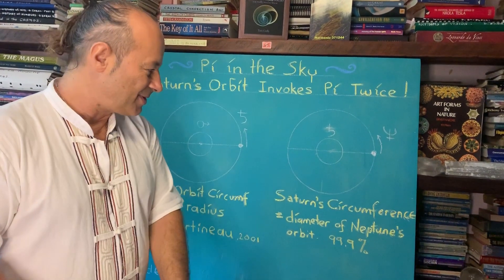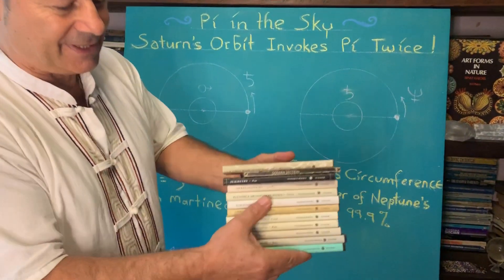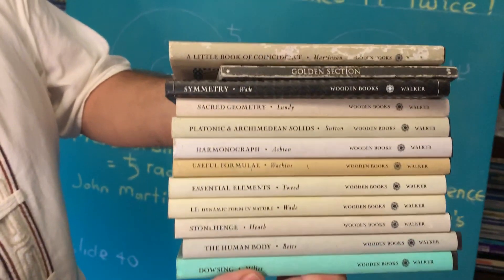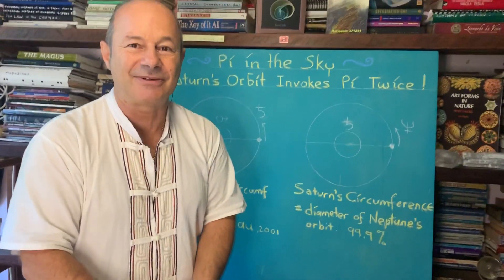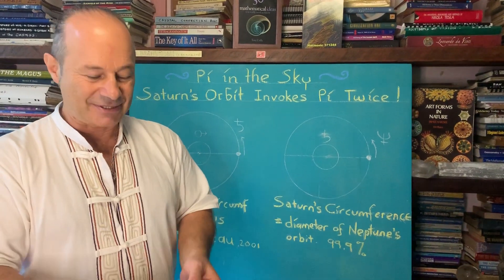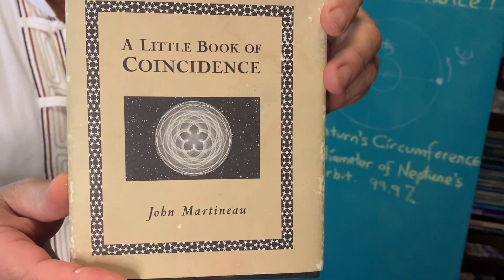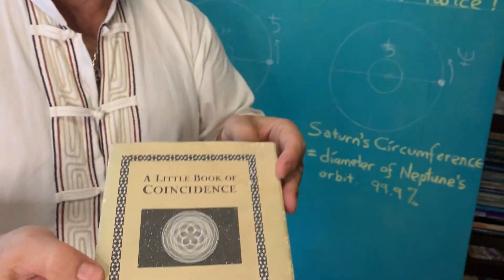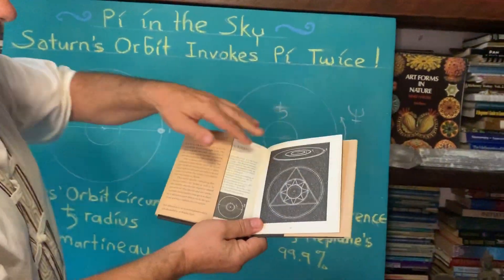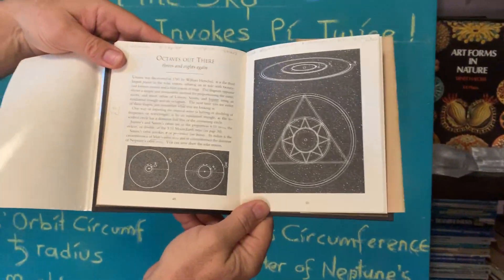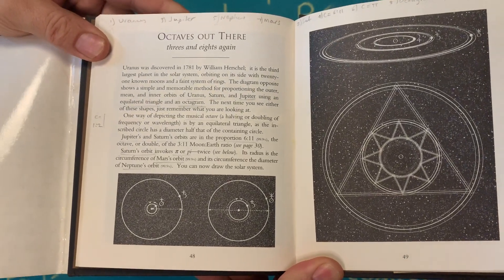I've got this diagram, and this information comes from a really special series of books — there's like 12 books here called the Wooden Book Series. These have inspired a whole generation of researchers like myself. This is perhaps the first one I got, called 'A Little Book of Coincidence' by John Martineau. When I go through this book, you can see there's about 60 pages showing these incredible diagrams between Pi and Phi.